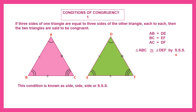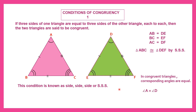In congruent triangles, the corresponding angles are also equal. So when you have congruent triangles, angle A equals angle D, angle B equals angle E, and angle C equals angle F. This is the first condition of congruency.